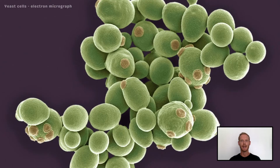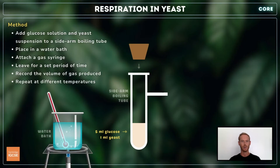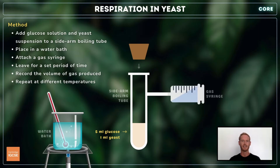Next, you need to investigate and describe the effect of temperature on respiration in yeast. Add glucose solution and a suspension of dried yeast to a sidearm boiling tube, and place in a water bath at a fixed temperature. Leave for a few minutes to allow the contents of the boiling tube to adjust to the temperature of the water bath, and then attach a gas syringe to the sidearm.